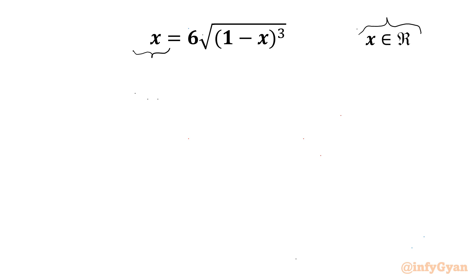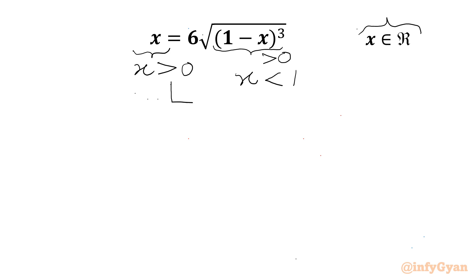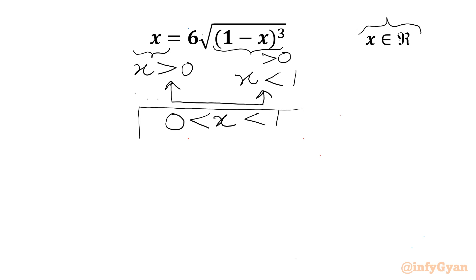The LHS should be positive, so x should be greater than 0 for real x. Similarly, the radicand must also be positive, so for this we can write x should be less than 1. Once we take the intersection of these two conditions, we get x should lie in the interval (0, 1). So our answer will be in between 0 and 1.